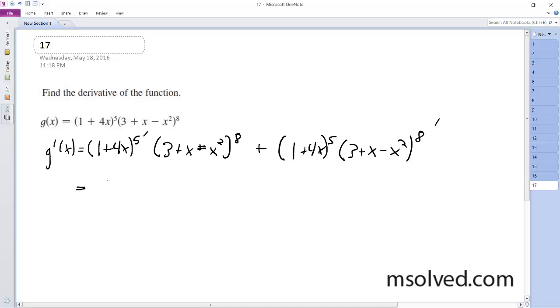So what happens here is the derivative on the inside, so we're going to have 5 times, derivative on the inside is 4, and then 1 plus 4x raised to the 4th, and then 3 plus x minus x squared raised to the 8th.